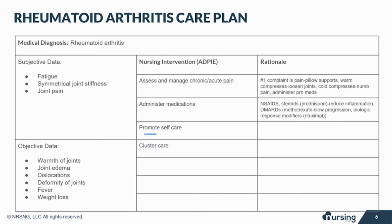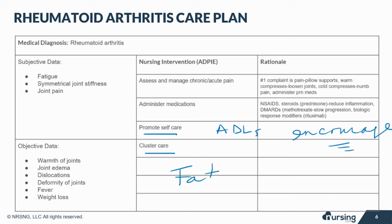Promoting self-care in patients with RA is critical because as the disease progresses, it may be difficult for patients to perform ADLs such as feeding themselves or combing their hair. Provide tools such as eating utensils or toothbrushes with larger grips to encourage the patient to remain independent. Fatigue is a very common symptom of RA, so it's important to cluster care and promote rest.